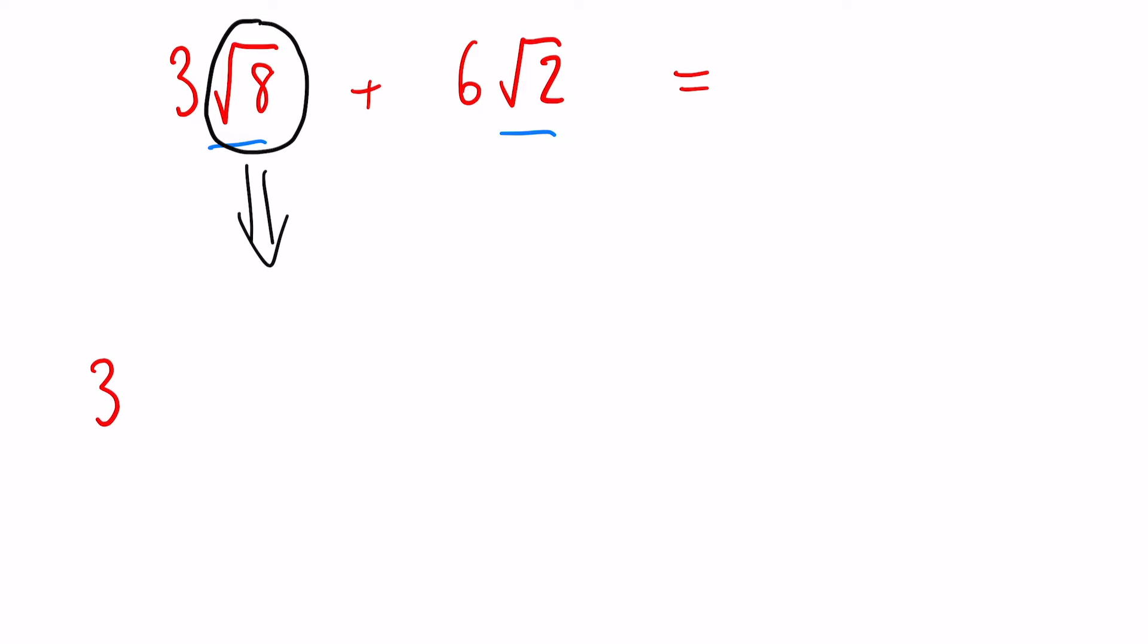Now if you haven't watched my simplifying surds video, I recommend doing that first as that will explain how we got to this bit here. So now that we've got the square root of 4 and the square root of 2, the square root of 4 will become 2. So we can say we've got 3 times 2 root 2, and we're adding that to the original 6 root 2.